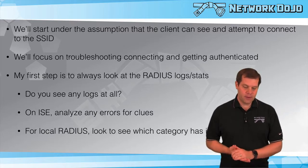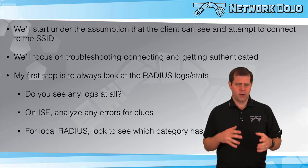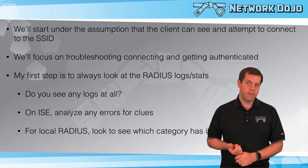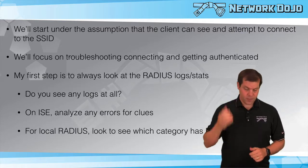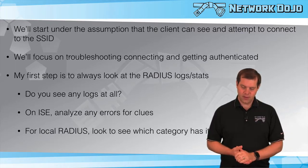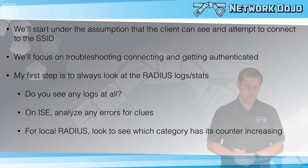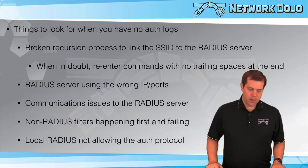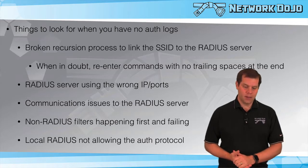Anytime there's 802.1x going on, my first step is always looking at the RADIUS server logs or statistics, depending on whether we're talking about ICE or local authentication on the APs. Do you see anything at all? Any logs in ICE, any statistics, any numbers counting up? One very common issue is that we don't get any auth logs at all, or the statistics aren't showing up on the local RADIUS server.